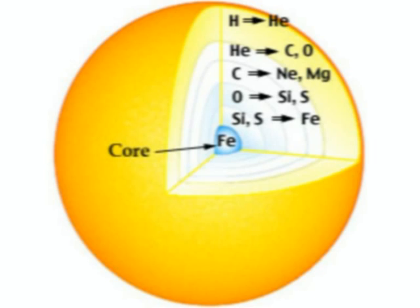So how do stars form then? Well, a star begins its life as a massive cloud of dust and gas, mainly hydrogen nuclei. Due to the gravitational attraction, the gas particles come together and eventually become so dense that it collapses. As a result, the temperature starts to increase and after a sustained period of time, the temperature is high enough for the thermonuclear reactions to occur.